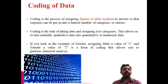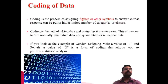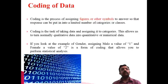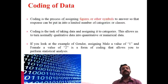Coding is essential for the analysis of data. A computer can only read in machine-readable format such as 0, 1, 2, 3, so qualitative information must be converted to a quantitative format. The coding process means giving numbers or symbols to particular questions so that qualitative data becomes quantifiable.